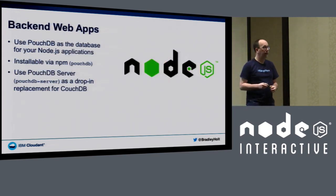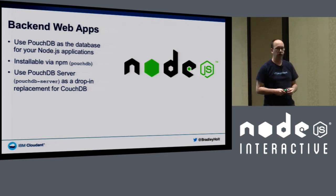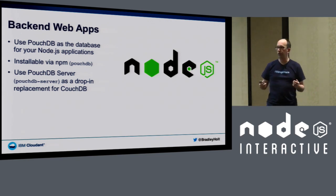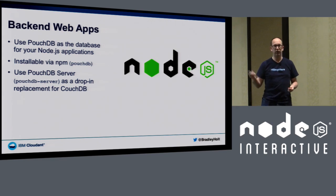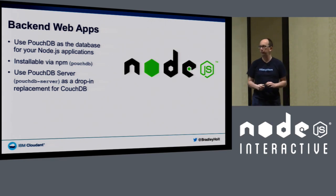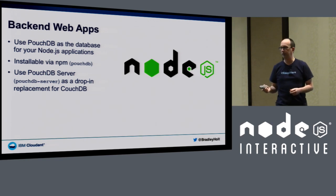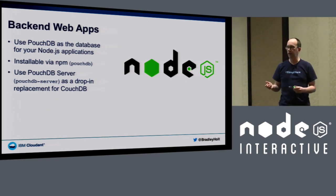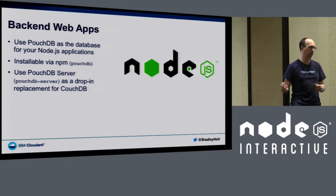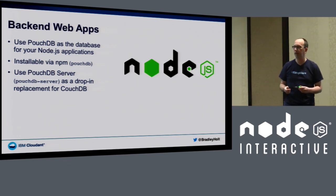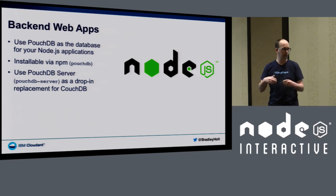PouchDB will also run in Node.js, so you can use it as the database for your Node.js apps. You simply install PouchDB through npm — it's just called PouchDB. You can also install PouchDB Server, which provides a drop-in replacement for CouchDB with the full HTTP API, fully in a Node.js environment.